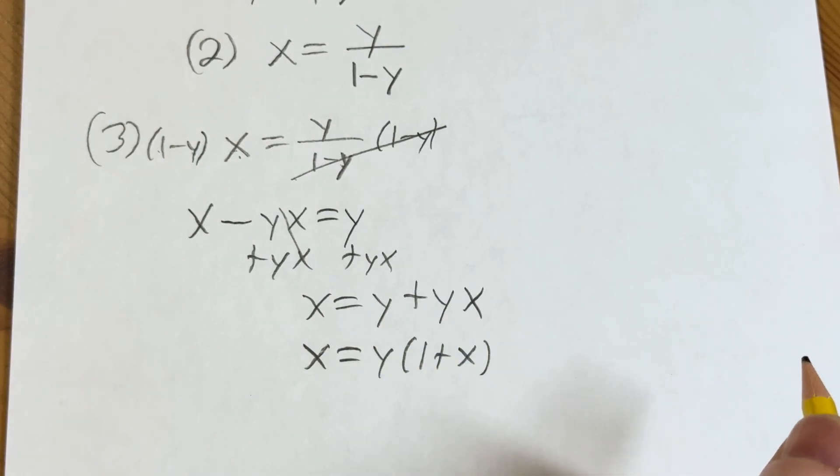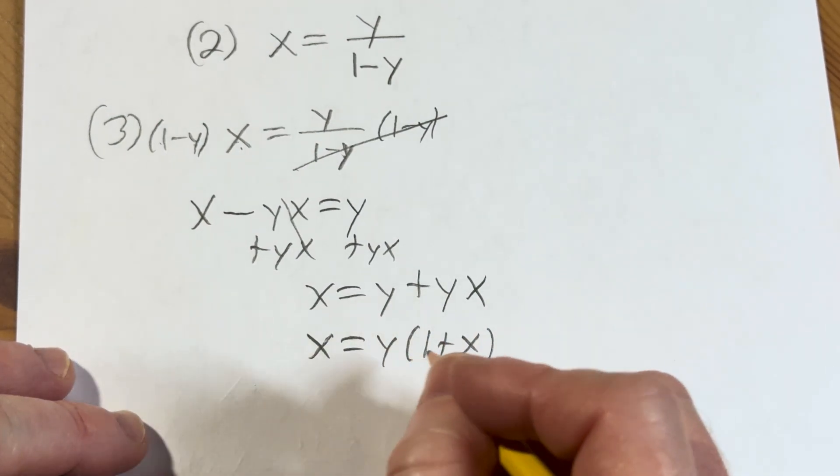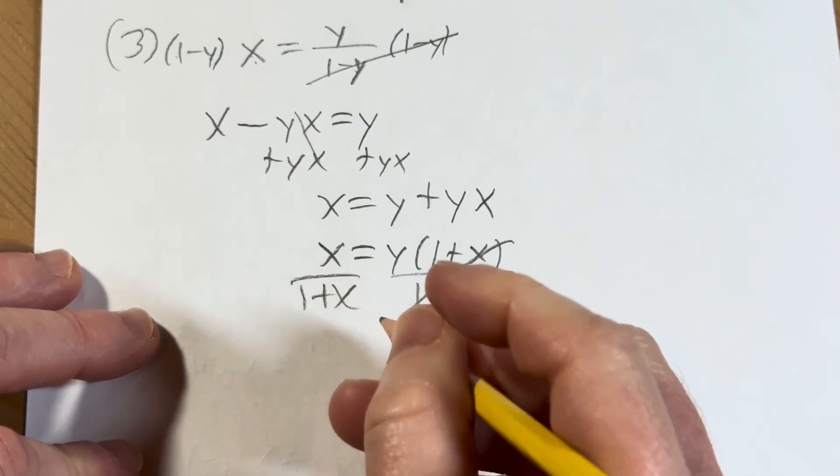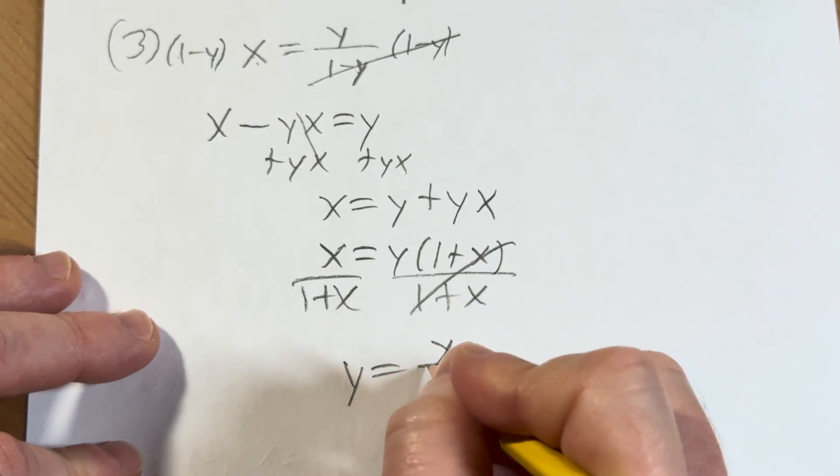So x equals y times (1 + x). Now we can divide by 1 plus x. So you get y = x/(1+x).